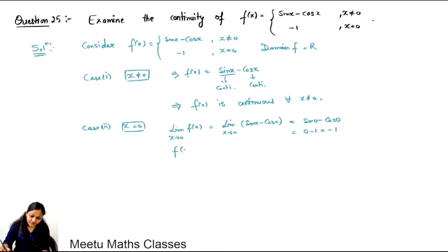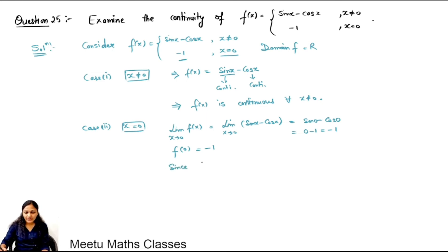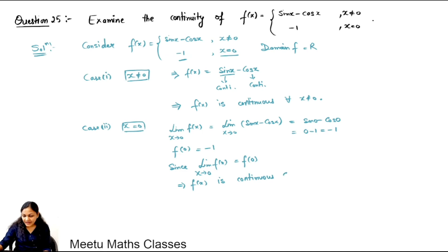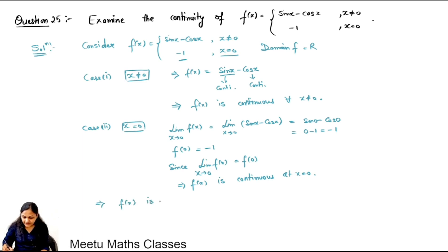The exact value of the function when x equals 0 is defined as minus 1. Since the limiting value as x tends to 0 and the exact value f(0) are both equal to minus 1, the function f(x) is continuous at x equals 0. These two cases together imply that f(x) is a continuous function.